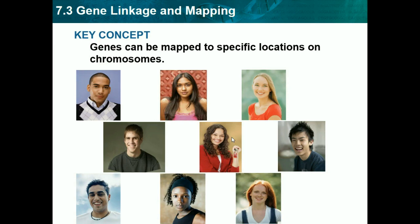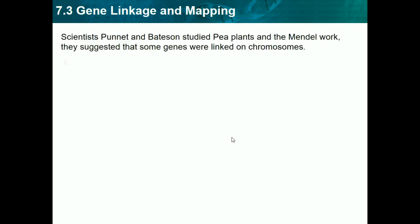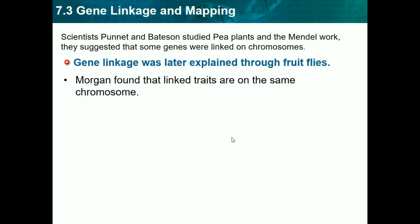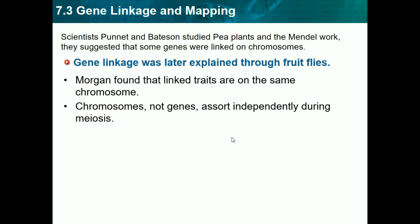Now we're on Section 7.3, Gene Linkage and Mapping. The key concept is that genes can be mapped to specific locations on chromosomes, just like alleles. Gene linkage was later explained through fruit flies — you just need to know that fruit flies were used to test genes. Morgan found that linked traits are on the same chromosomes. Chromosomes, not individual genes, assort independently during meiosis — that's one of Mendel's laws of independent assortment.